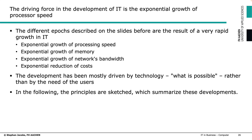The driving force in IT development is the exponential growth of processor speed. The different epochs described before are the result of a very rapid growth. Exponential growth is something you cannot really imagine. You might remember the exponential growth of COVID in the last two years — when we first had five or ten infected persons, then suddenly figures boosted to hundreds and thousands, and you couldn't predict what would happen next. This kind of exponential growth has been true for computers, processors, and memory for 50 years.